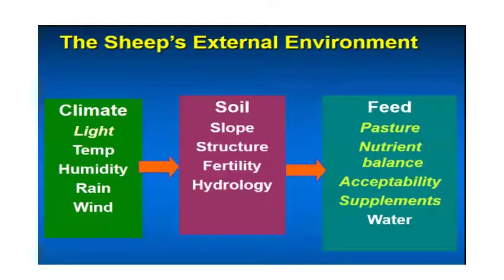Regarding the role of environment, there are two kinds: external and internal. In the external environment, three interconnected elements are climate, soil, and feed. Climate components — light, temperature, humidity, rain, and wind — influence soil characteristics such as slope, structure, fertility, and hydrology. Soil in turn affects feed and fodder. Feed factors include pasture, nutrient balance, acceptability, supplements, and water. These three elements together influence the physiology and growth of the animal, thereby affecting wool fiber growth and quality.